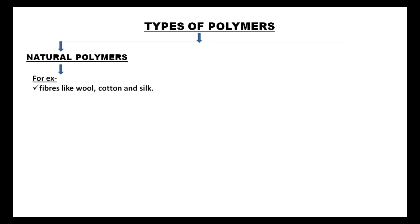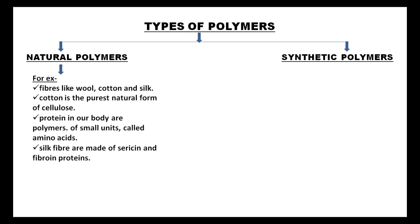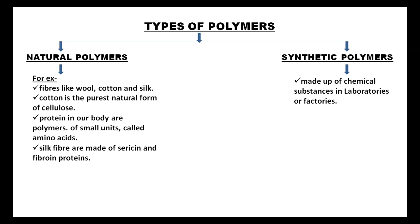Proteins present in our body are polymers of small units called amino acids. Silk fiber is made of sericin and fibroin proteins. Synthetic polymers are made from chemical substances in laboratories or factories.